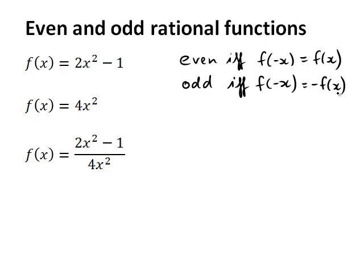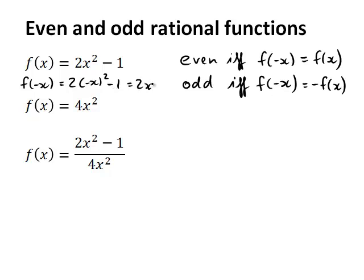So if we're looking at 2x squared minus 1, is that even or odd? If I find f of negative x, that is going to be 2 times negative x squared — don't forget the brackets — minus 1. And as it turns out, negative x squared is the same as x squared. So this is 2x squared minus 1, and that's the same as f of x. So that means this first function was even.